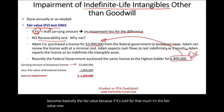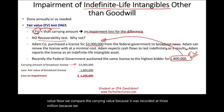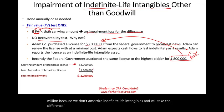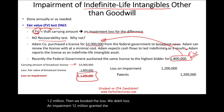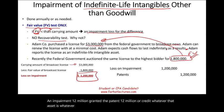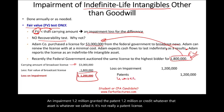We compare the carrying value of $3 million (since we don't amortize indefinite life intangibles) to the fair value of $1.8 million. The impairment loss is $1.2 million. We debit loss on impairment $1.2 million and credit the license $1.2 million.